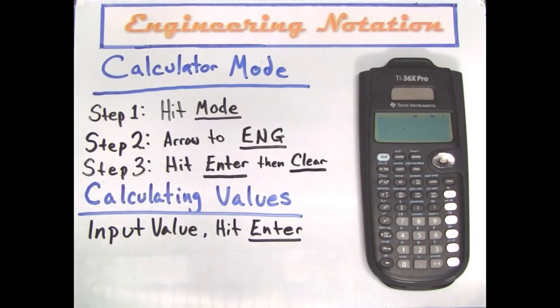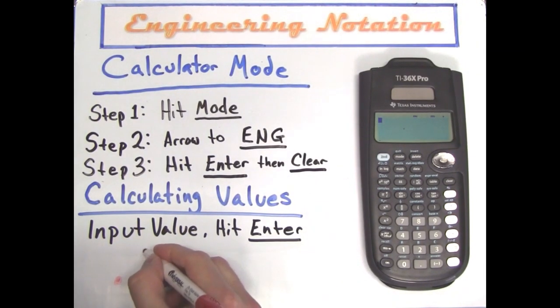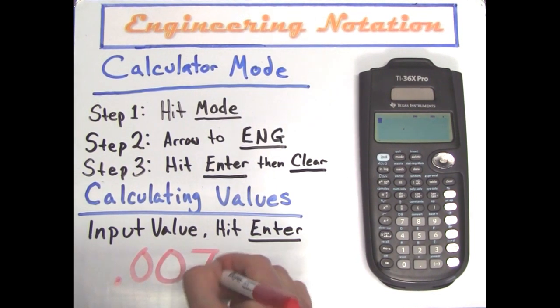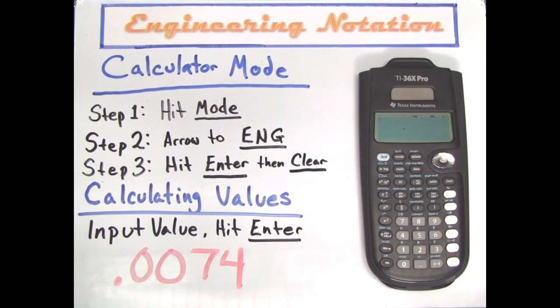Let's do another example. 0.0074. Our calculator is already in engineering notation mode, so all we have to do is plug in this number and hit enter.